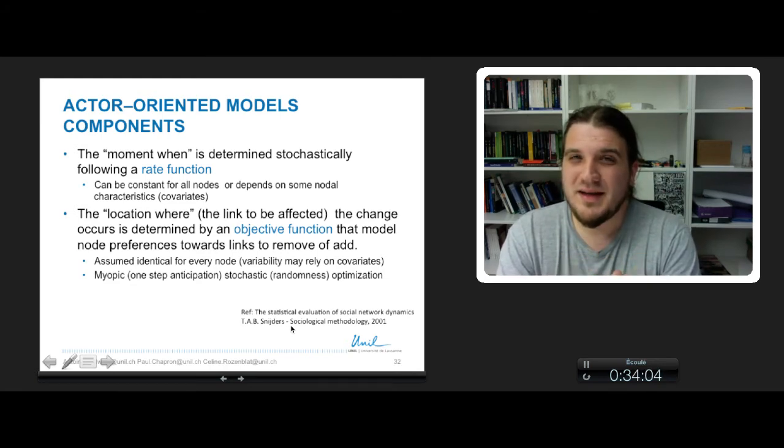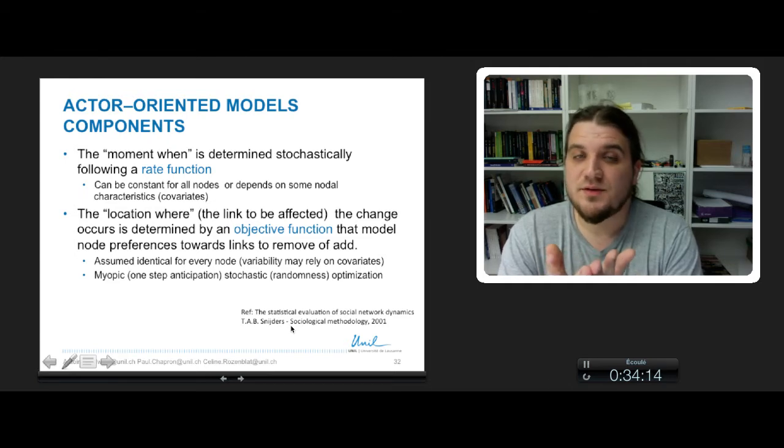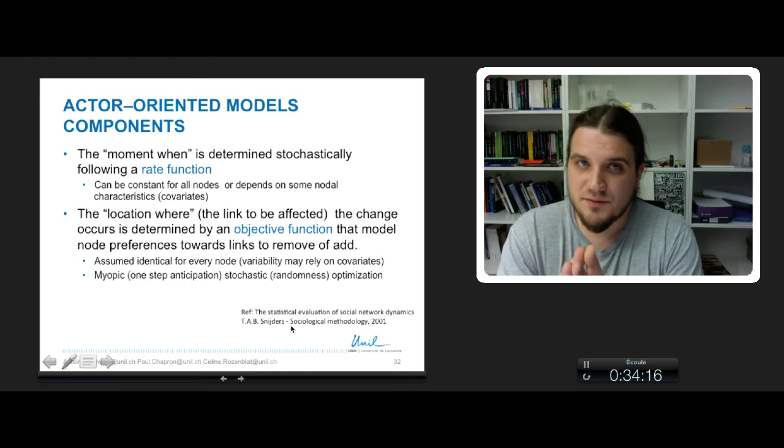The rate function is like the intensity matrix in the Markov chain of the previous models. It defines the moment when a link is likely to change. So it is determined stochastically by a rate function.